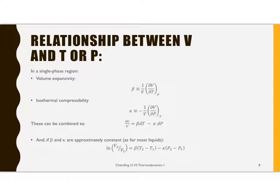Now if you combine these and consider V to be a function of temperature and pressure, then you can get this differential form, which says that dV over V is beta dT minus kappa dP. This is great, and this is generally true because these are definitions. So this is general.